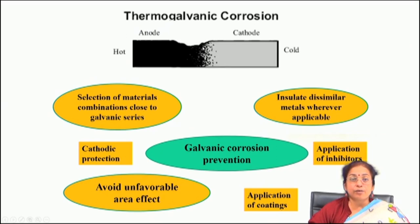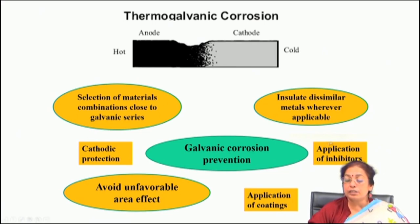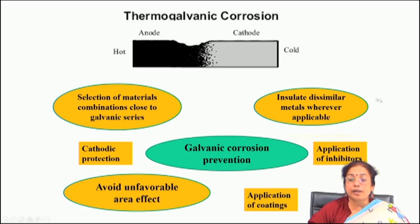To combat galvanic corrosion, techniques normally applied for general corrosion prevention are also applicable: cathodic protection, application of inhibitors in the environment, and application of coatings. Apart from these, you can choose proper material combinations that are very close in the galvanic series. You can apply insulation between dissimilar materials, and another very important prevention method is avoiding the unfavorable area effect.